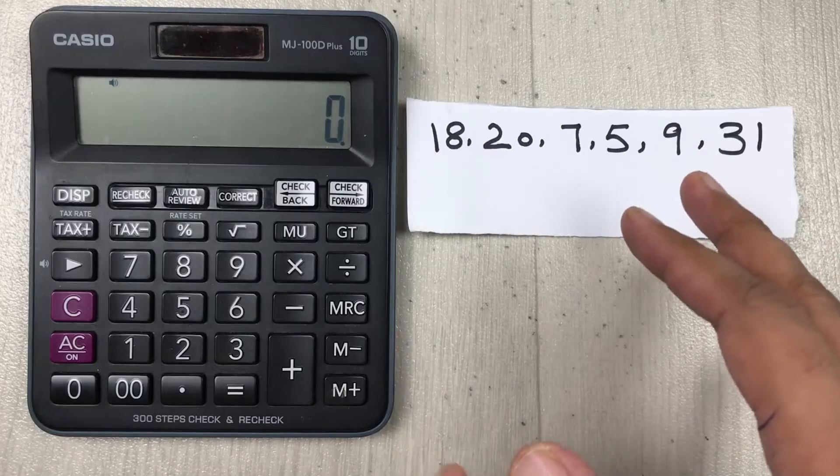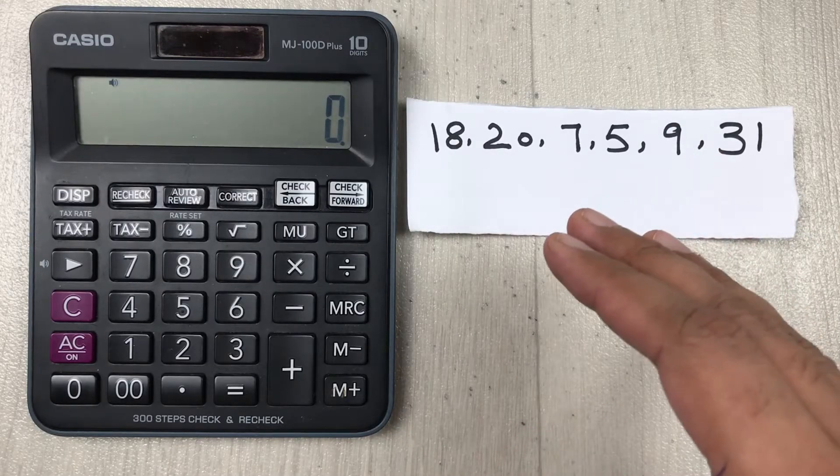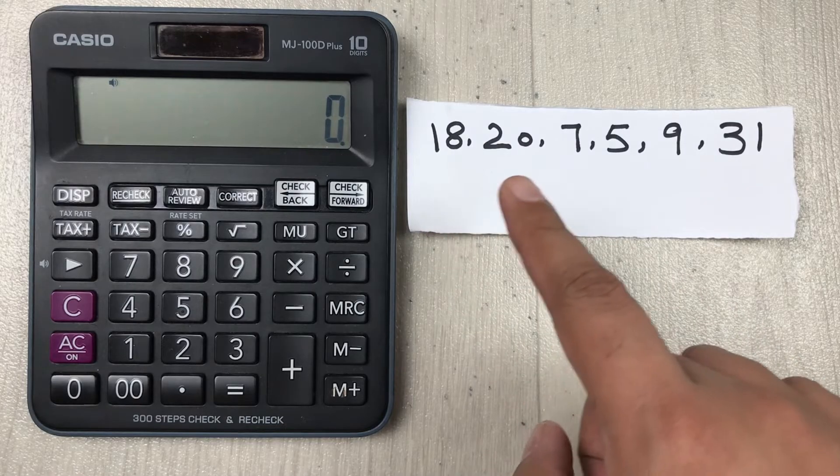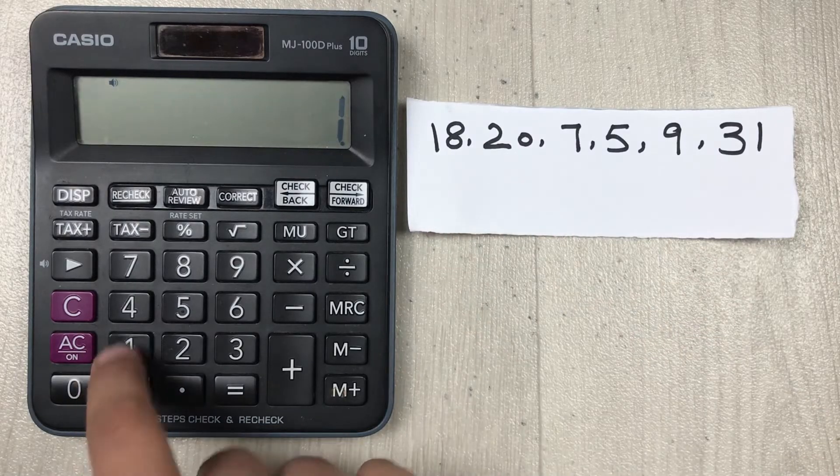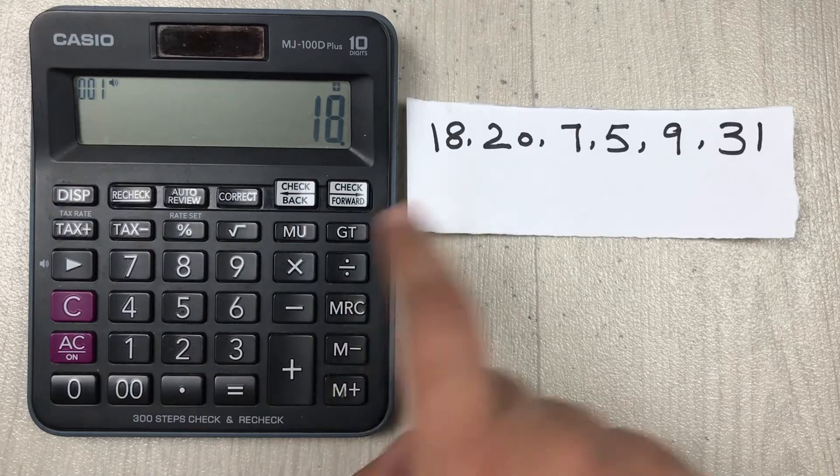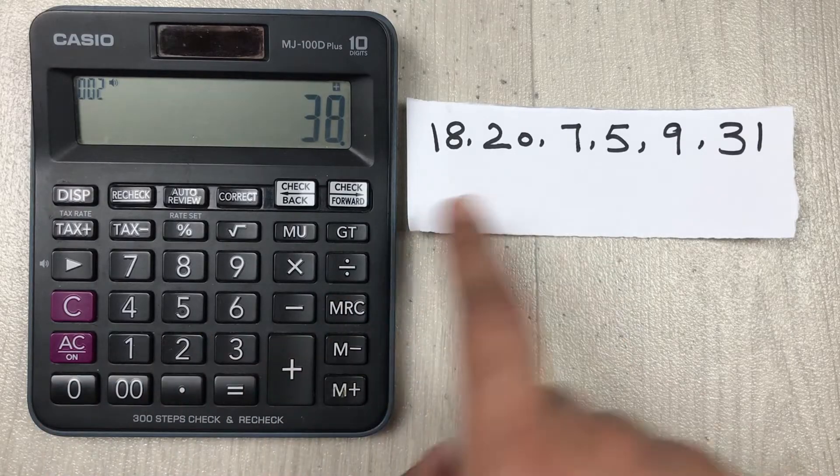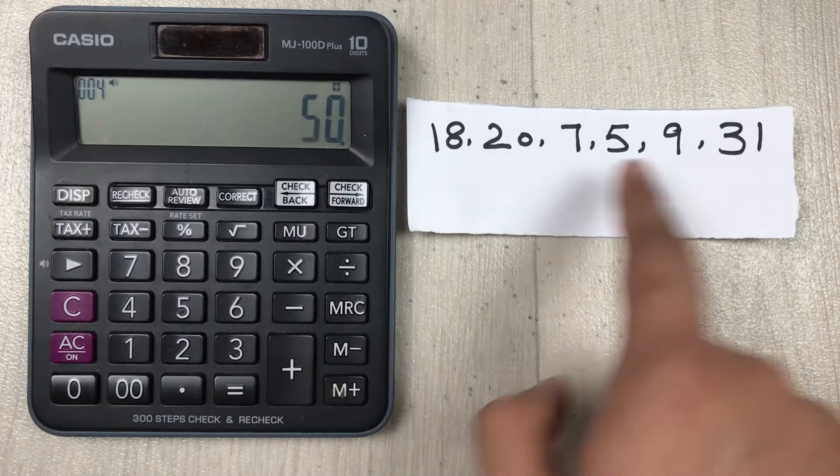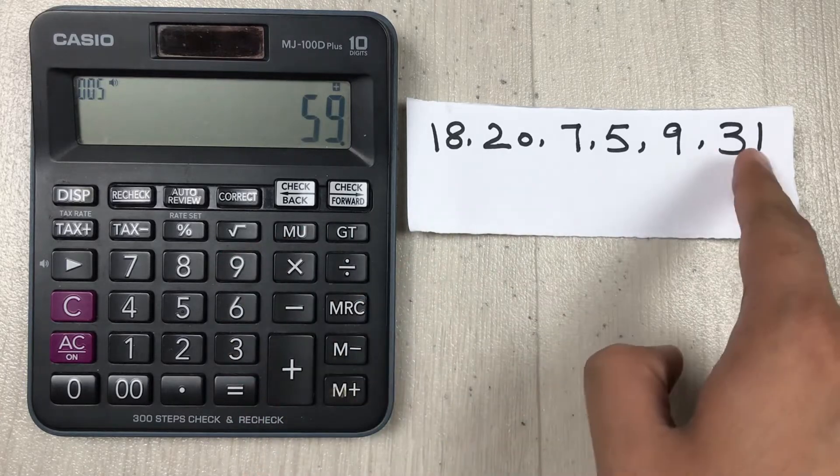I will do it in a three-step process. In the first step, I will add these numbers. So 18 plus 20 plus 7 plus 5 plus 9 plus 31.